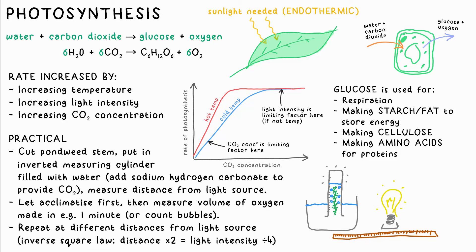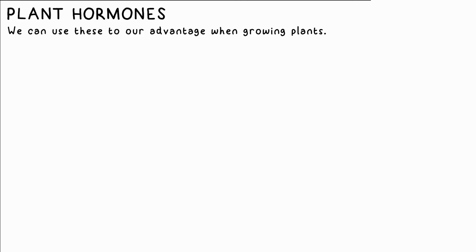You can alternatively count the bubbles, but it's less accurate. The independent variable could be light intensity, changed by varying the distance from the light source. However, light intensity follows an inverse square relationship — if you double the distance, the light intensity quarters; three times the distance gives one ninth of the intensity.